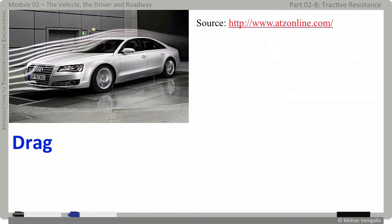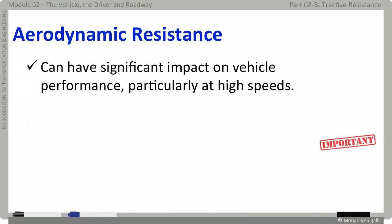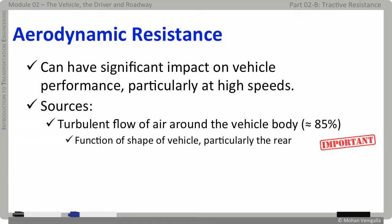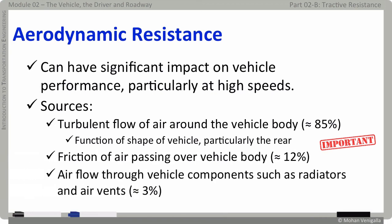Drag is a result of turbulent flow of air around the vehicle body. Turbulent air flow accounts for approximately 85% of aerodynamic resistance, which is dependent on the shape of the vehicle — particularly the rear — where a vacuum zone can form. Some cars include a wind shear in the rear to break vacuum formation and reduce drag. Friction of air passing over the vehicle body accounts for about 12%, and airflow through components such as radiators and air vents accounts for about 3%.